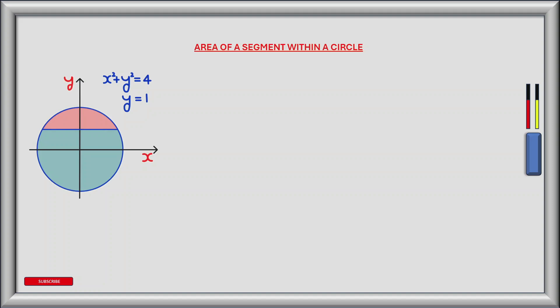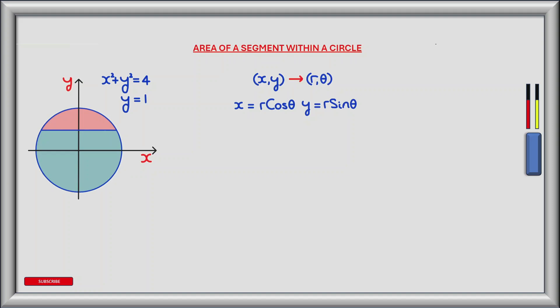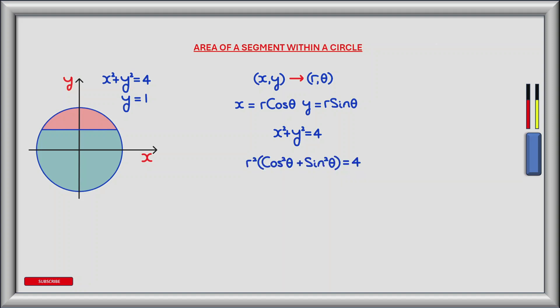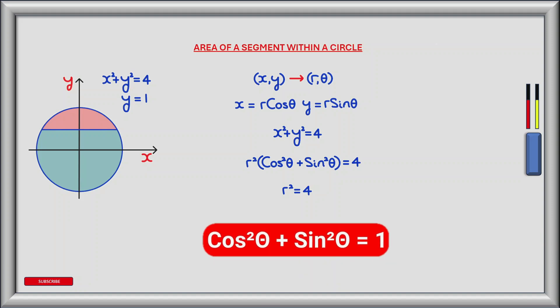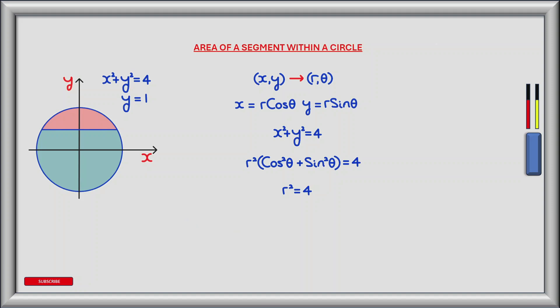The first step to finding the area is to convert the equations of the circle and the horizontal line from Cartesian coordinates to polar coordinates. To do this we'll substitute r cos theta for x and r sin theta for y. Beginning with the circle in Cartesian form, x squared plus y squared equals 4, making the substitution gives r squared times the bracket cos squared theta plus sin squared theta equals 4. Using the trig identity where cos squared theta plus sin squared theta equals 1, we're left with r squared equals 4, and taking the positive square root gives r equals 2.